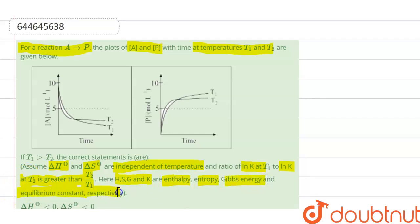Here H, S, G, and K are enthalpy, entropy, Gibbs free energy, and equilibrium constant respectively. So let us see, for here we are given reaction A to P.